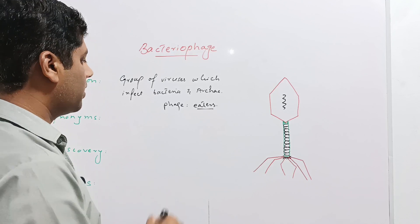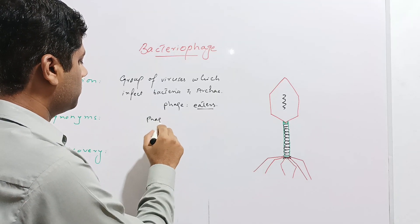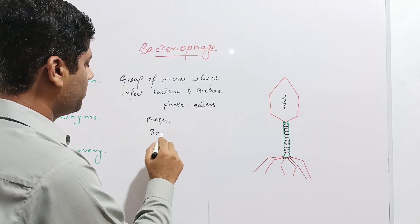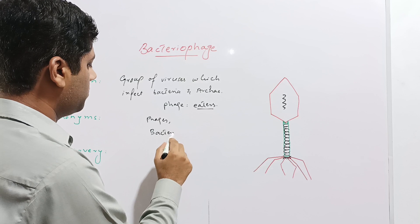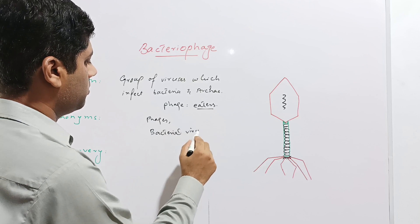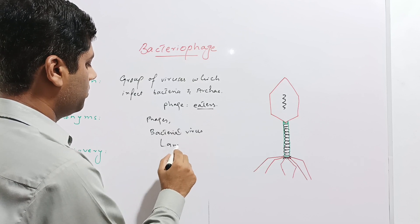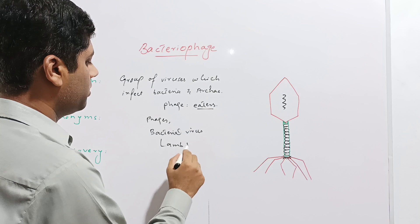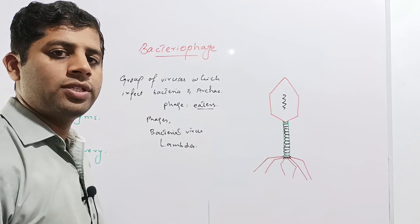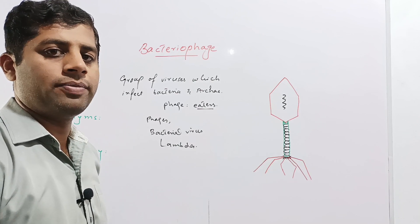Bacteriophage are also called as phages, bacterial viruses, or lambda. These are the three synonyms of the bacteriophage: phages, bacterial viruses, or lambda.